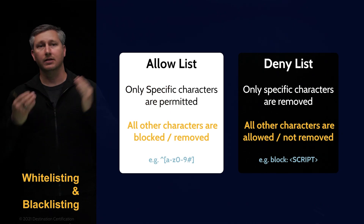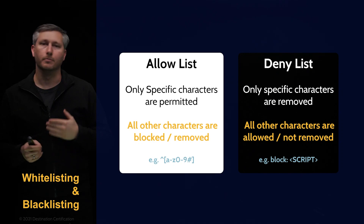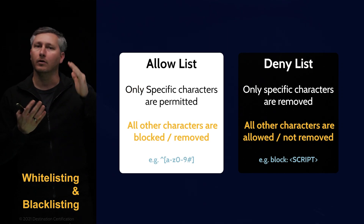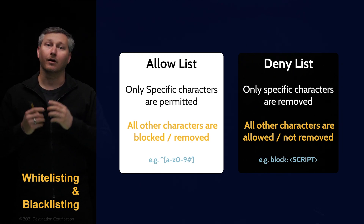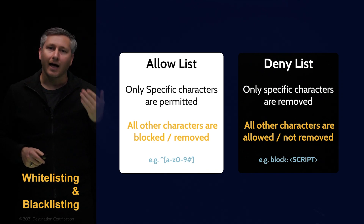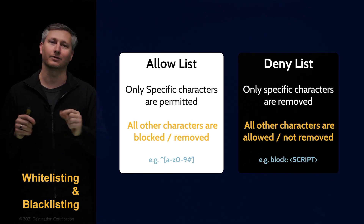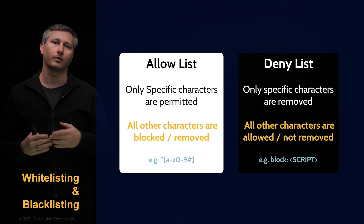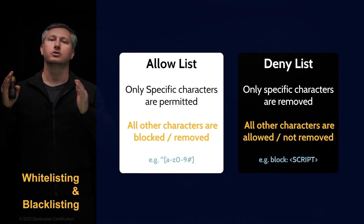What's the difference between allow lists and deny lists? An allow list means only specific characters will be permitted and all other characters will be blocked. For example, you might allow lowercase letters A through Z, numbers, and the hash symbol. If a user submitted any other character, like an uppercase letter or a dollar sign, it would be blocked. Deny lists are the inverse — only specific characters are blocked or removed, and all other characters are allowed. For example, you might block the characters open bracket, uppercase script, closed bracket if you're trying to block a cross-site scripting attack using JavaScript. But this block would be easy to bypass just by using lowercase letters for script. This is why deny lists are less secure — it is impossible to imagine all the different things you should block for all the various types of creative attacks out there. It's much more secure to just allow a select few characters and block everything else. So an allow list is more secure.